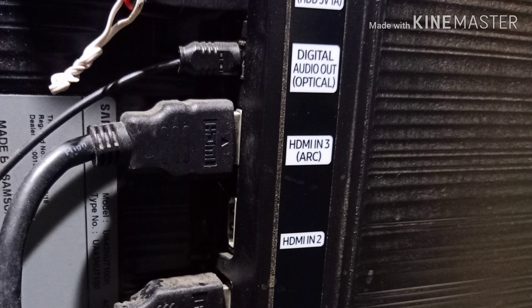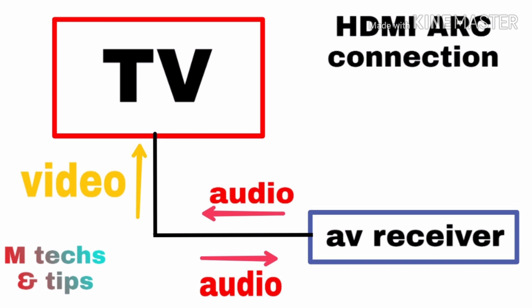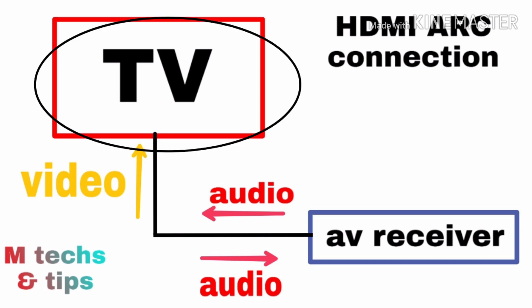This is a TV backside. This is the HDMI ARC port. HDMI ARC means a single HDMI cable supports 2-way transmission. This is the HDMI ARC port on the AV receiver.